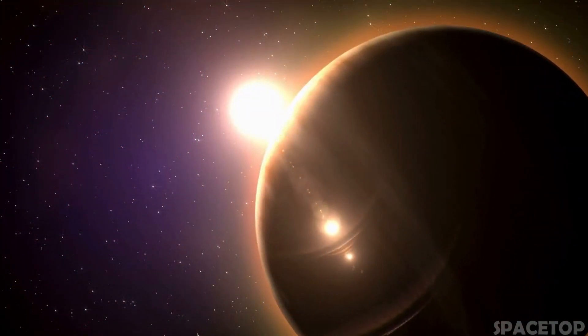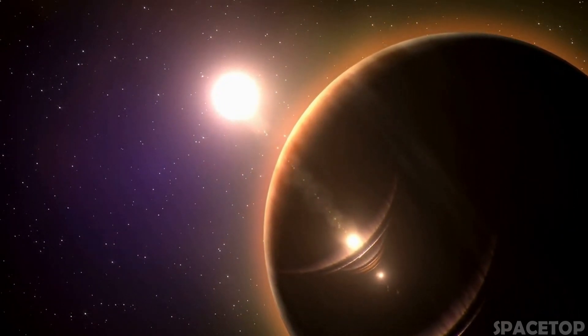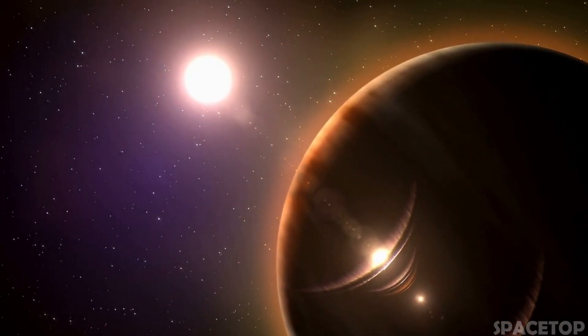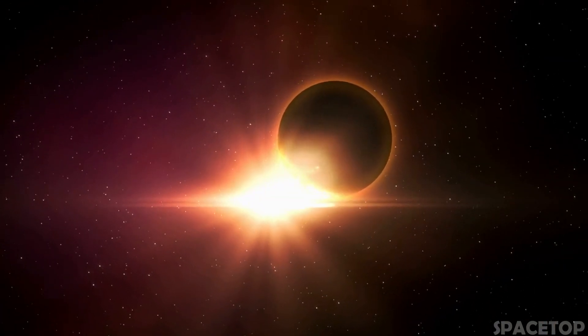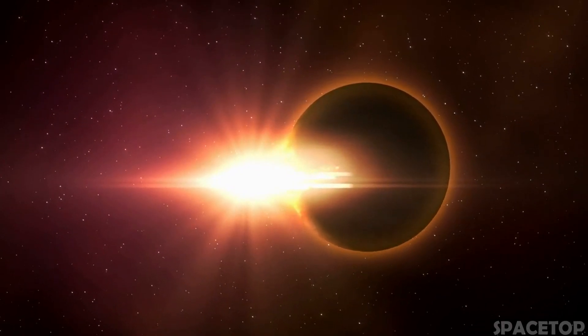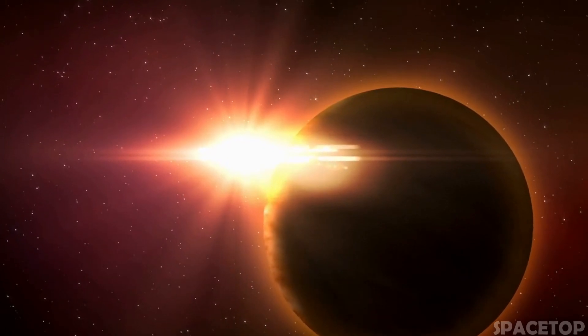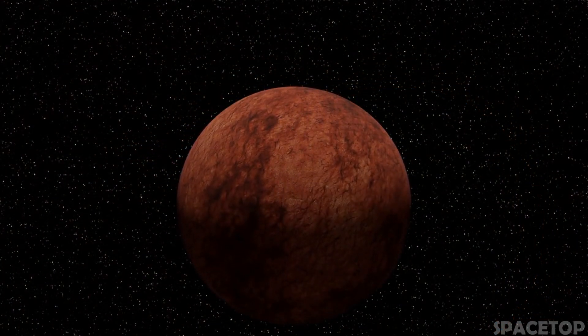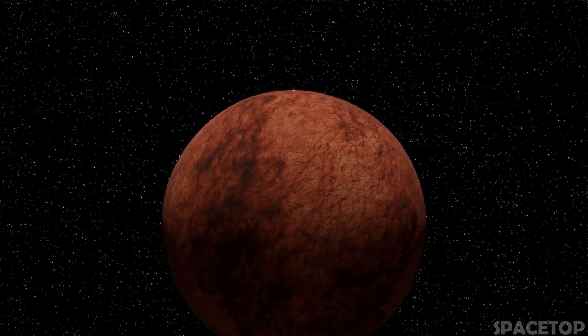If we could somehow get to this exoplanet and hover on the edge of the atmosphere of this world with the help of our spaceship, we would see breathtaking and unusual things. The view from below would most likely be filled with dark brown and gray clouds. And instead of one Sun, you would see two, one 17 times larger than our star and the other completely smaller and only slightly brighter than our Sun. But despite this, a fainter star will still glow a thousand times brighter than the full moon here on Earth.